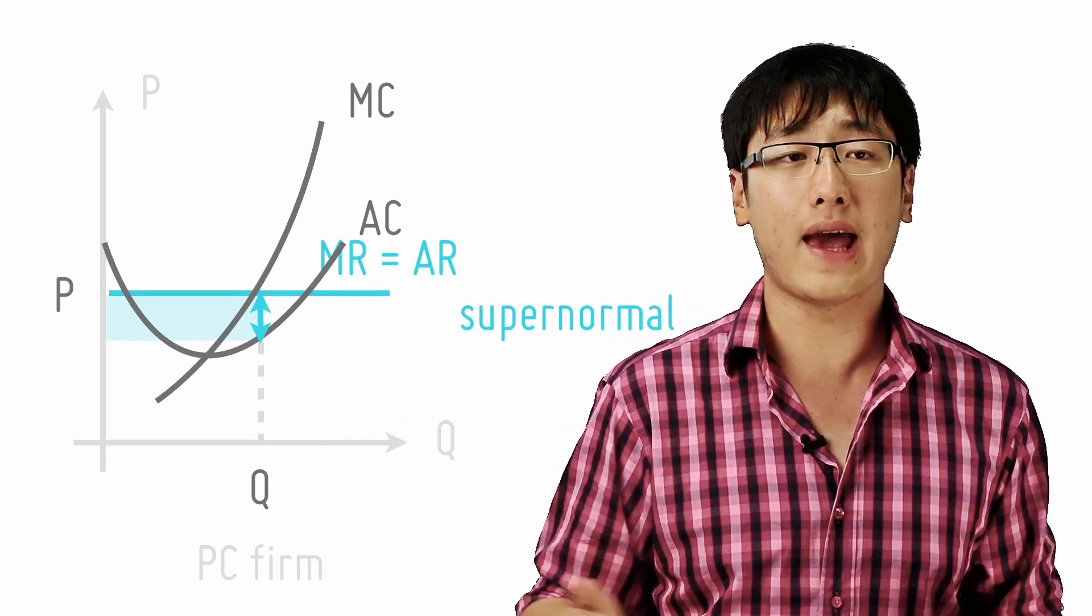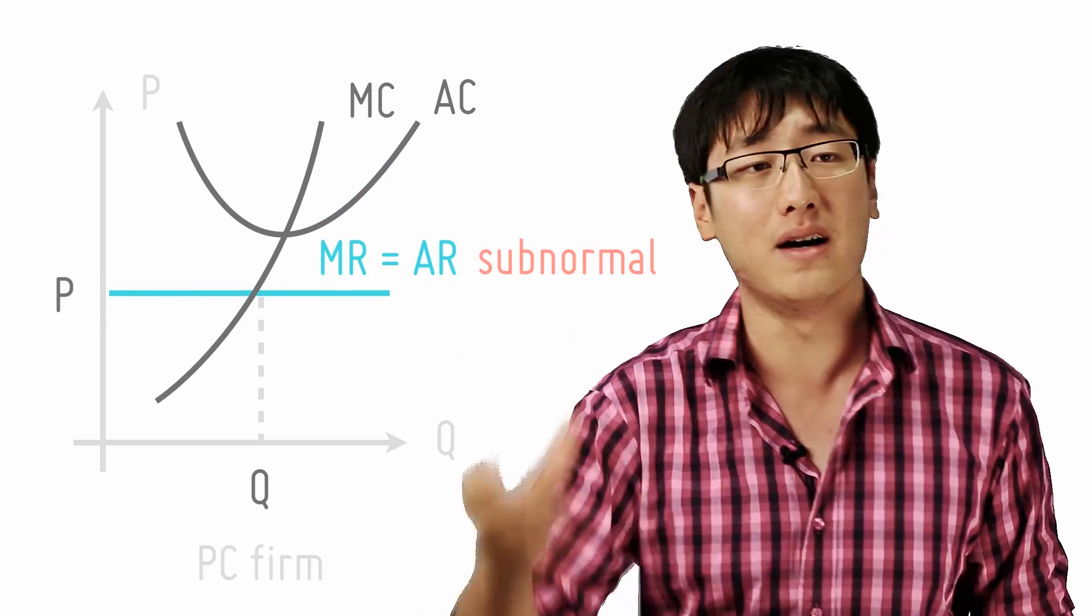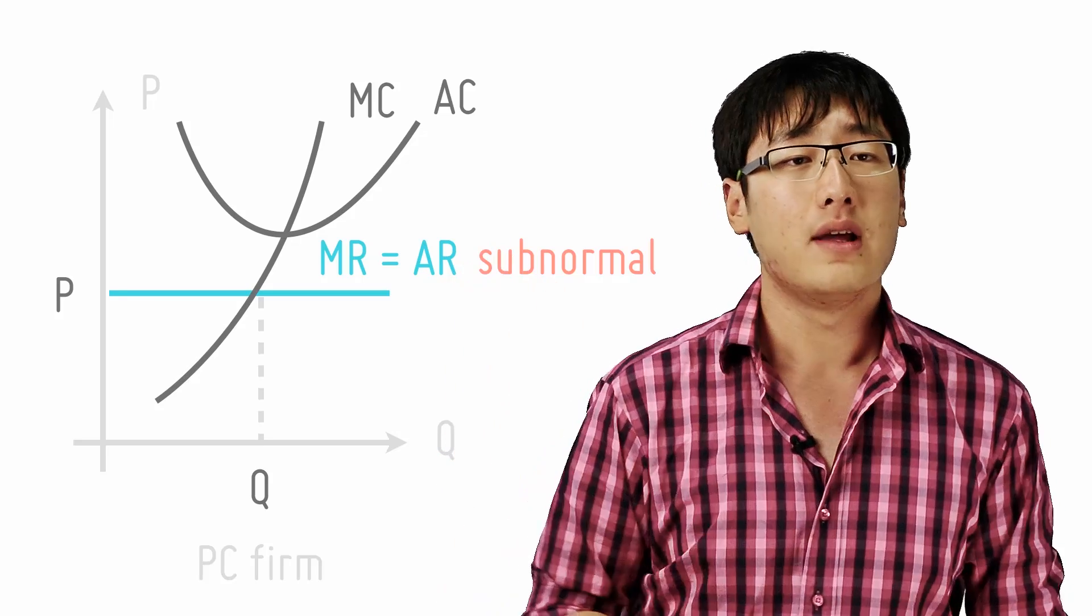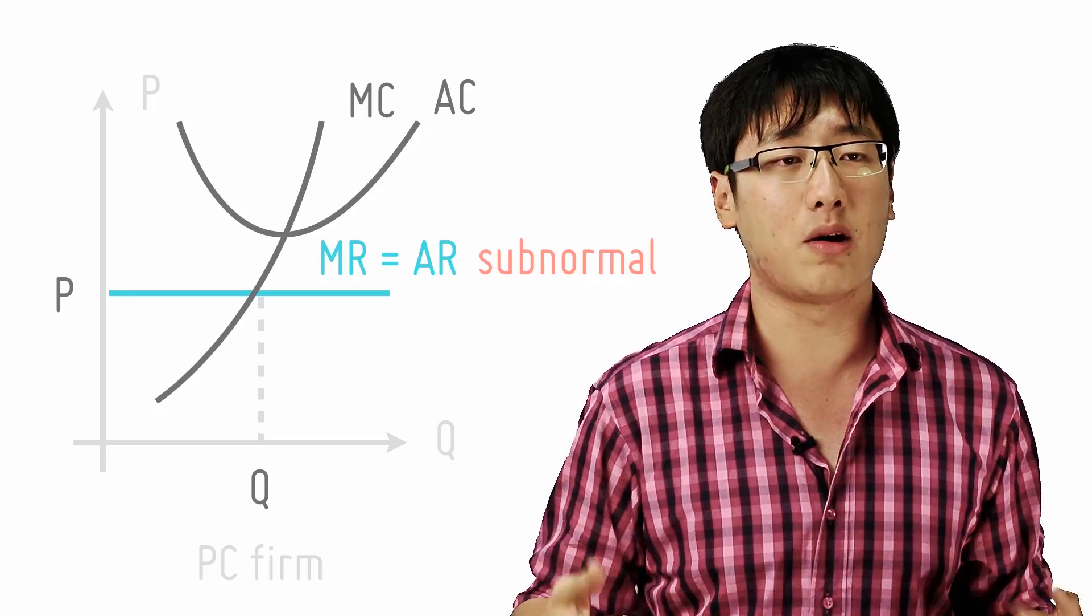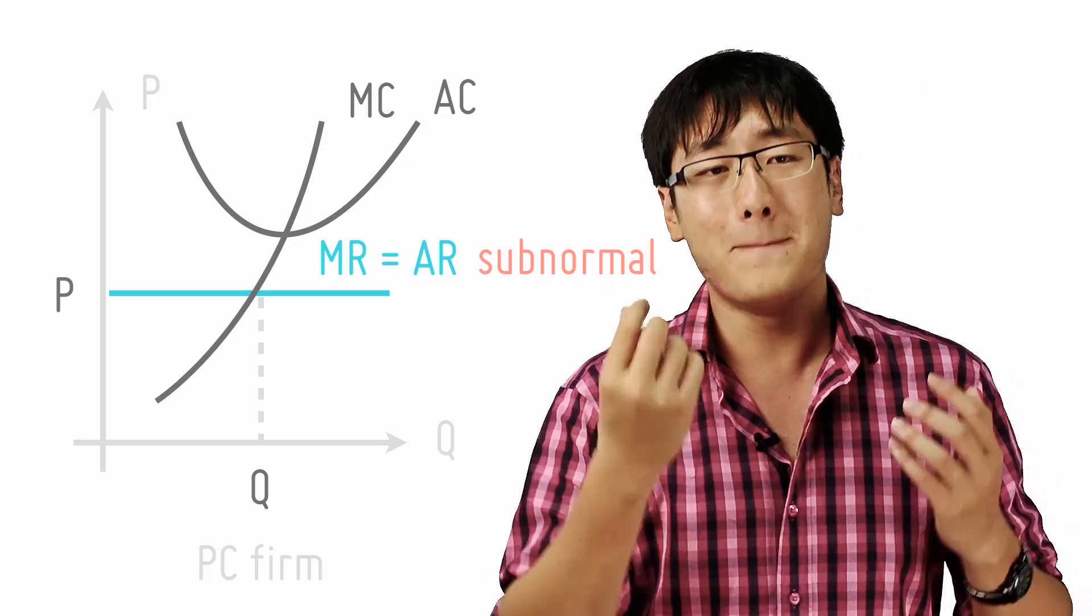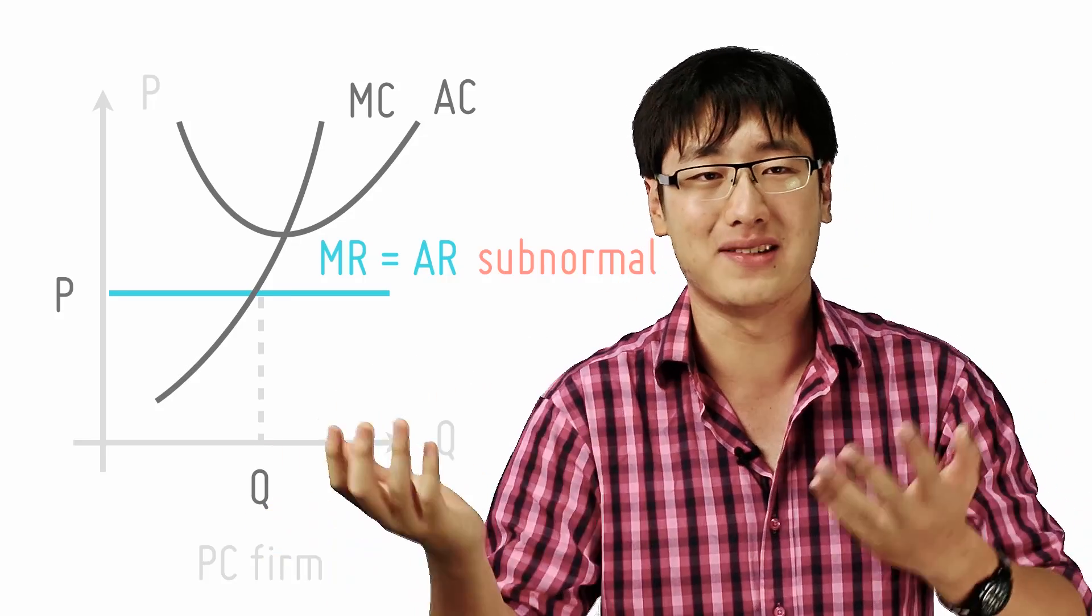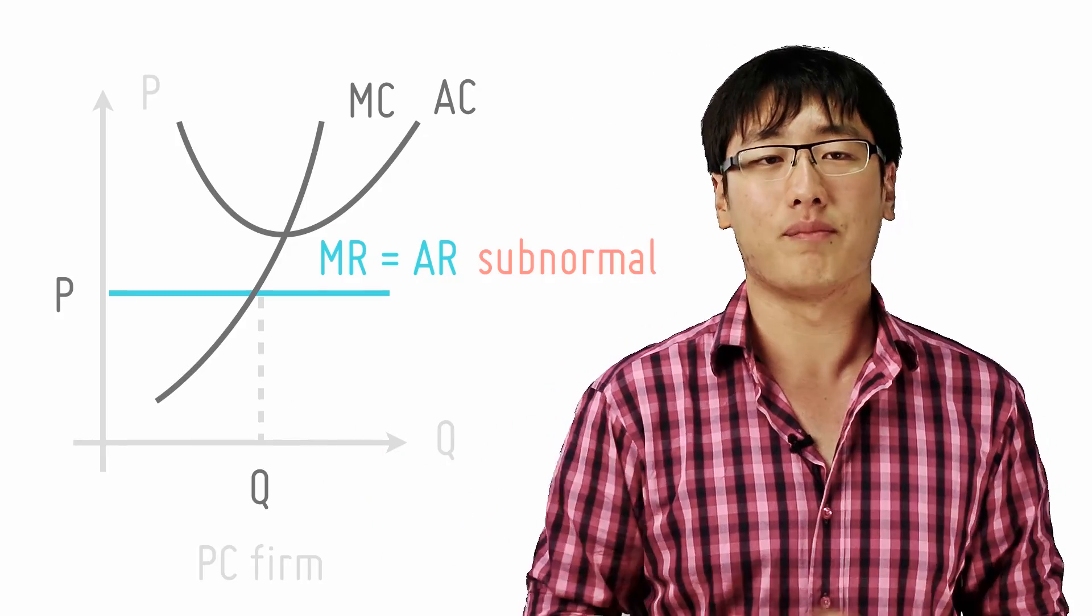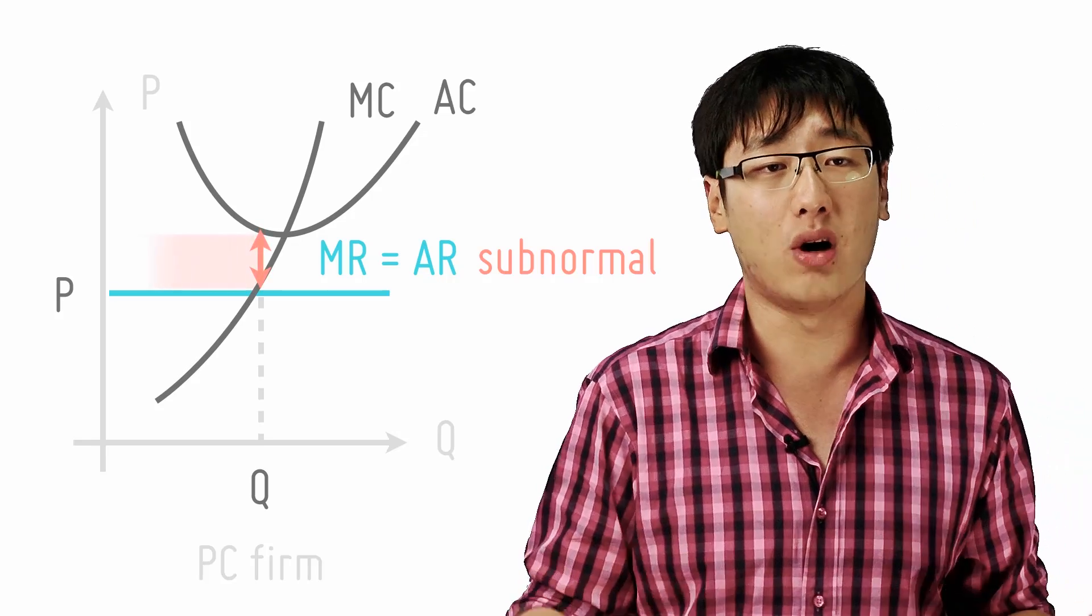What happens if the firm cannot make a profit at any level of output? Well this situation will occur if AC is above the AR at all points. This is illustrated here in this case. And the firm still produces at a profit maximizing price where MC equals MR. In this case however, since the profit is negative, we are producing at a loss minimizing or you can say negative profit maximizing to minimize the loss. So profit maximizing, loss minimizing, same thing. The loss is represented by the rectangle and the firm is earning subnormal profits.